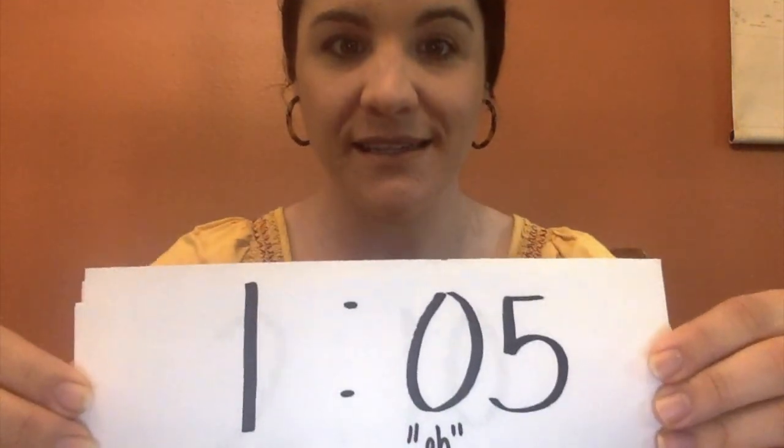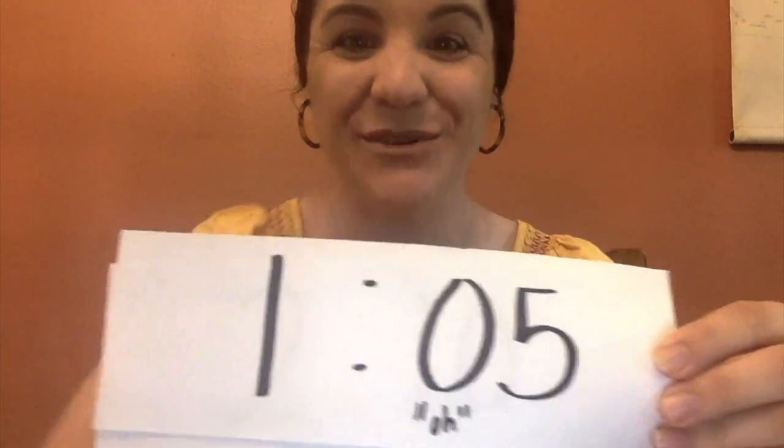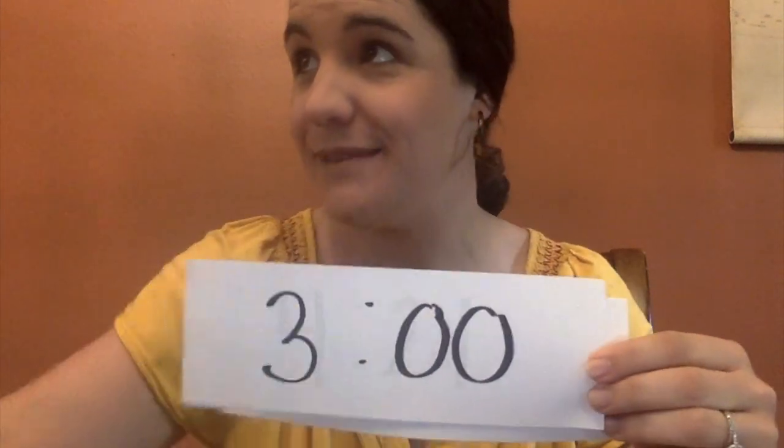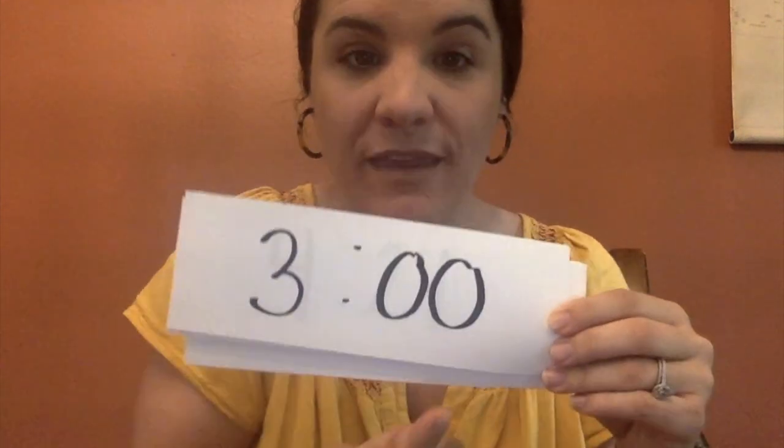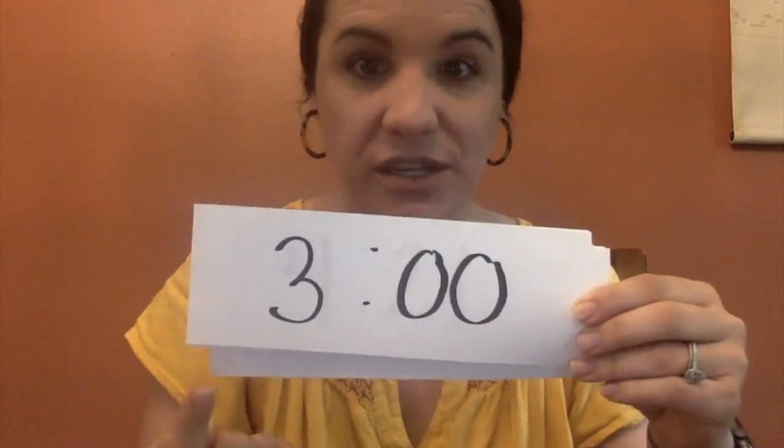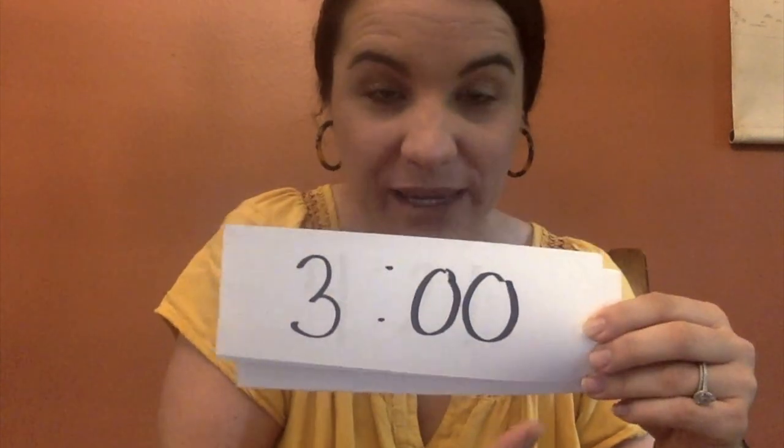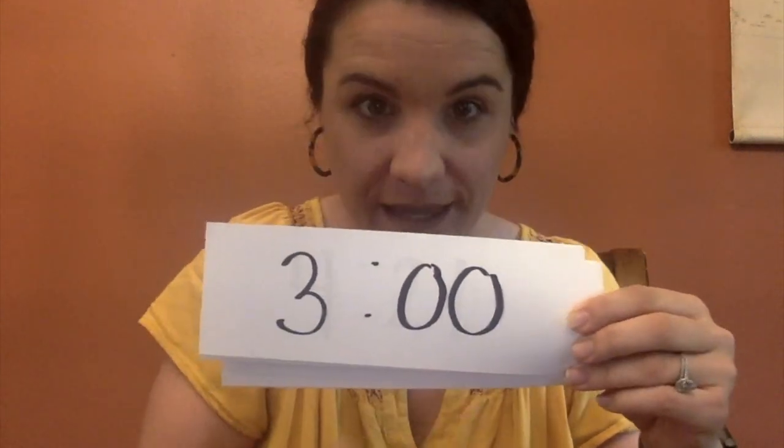The time is? Yes. If you said 1:05, that's correct. High five to you. Here we go. The time is? Yes. 2:10. Let's keep it going. Get ready. The time is? Remember, when there are two zeros, we just say 3 o'clock. We say 3. Yes. Here we go. One more. The time is? Yes. 4:21.